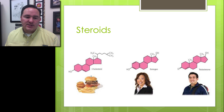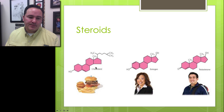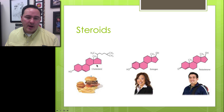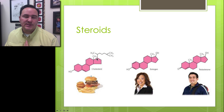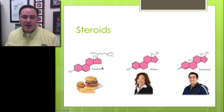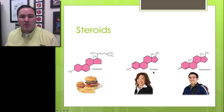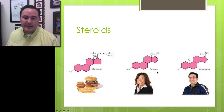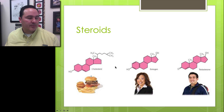The next group is steroids, which come from cholesterol. Cholesterol is something we need in our diets — not in excess, but we should have it — because our bodies use cholesterol to make estrogen and testosterone. So steroids are also an important part of the lipids group.